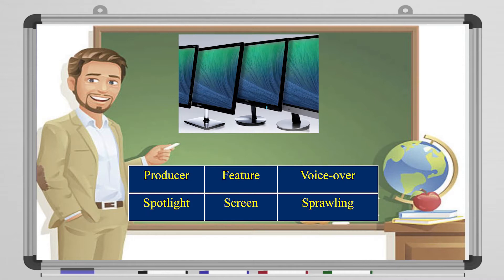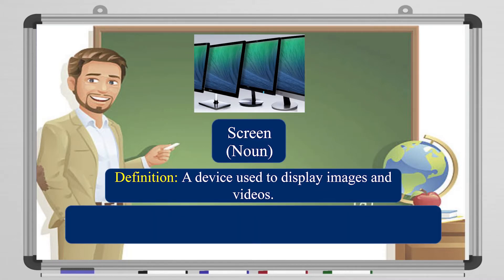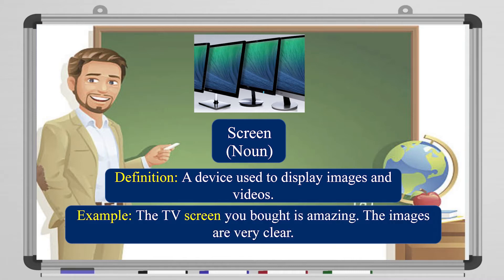Let's look at the other word. We have a bunch of screens. 'Screen' is a noun — it is a device used to display images and videos. I'm pretty sure you are watching this video through your mobile phone, a television screen, or a laptop. Either one uses a screen. The example: the TV screen you bought is amazing — the images are very clear.